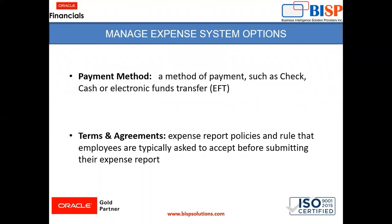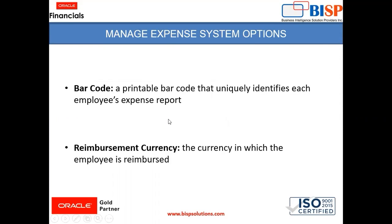First is payment method — a method of payment such as check, cash, or electronic fund transfer. Then terms and agreement — expense report policies and rules that employees are typically asked to accept before submitting their expense report. Then barcode — a printable barcode that uniquely identifies each employee's expense report. And finally reimbursement currency — the currency in which the employee is reimbursed.